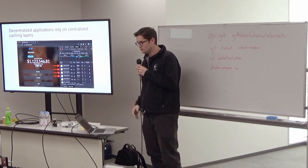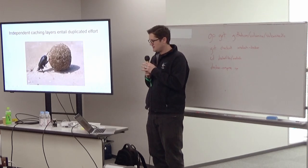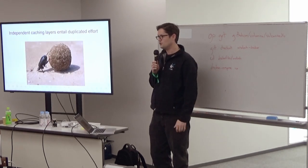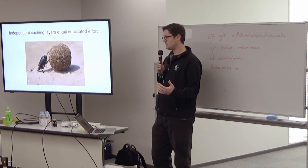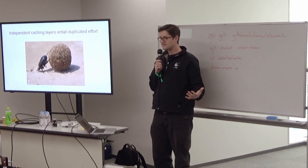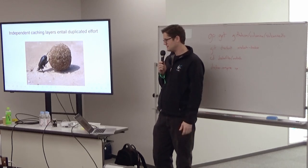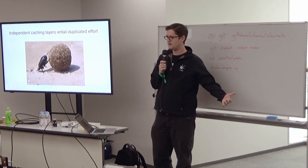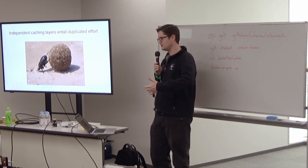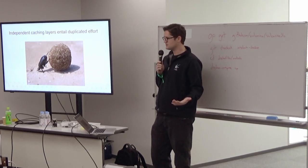In addition to centralization around access to data, another thing we've got is a lot of duplicated effort. When I've spoken with people about VulcanizeDB in the hallway, the most common comment I get is: 'Oh, that sounds really great — we had to build something like that in-house to support our own infrastructure.' It's amazing how many teams have gone through the work of figuring out how to extract data from an Ethereum node, decode it, and put it into a Postgres database. The fact that so many people are doing it raises the obvious question: why don't we have a shared toolset for that?